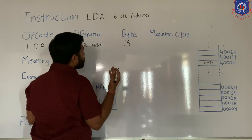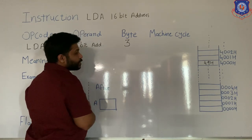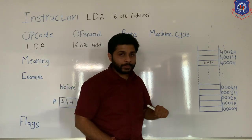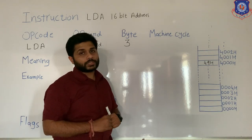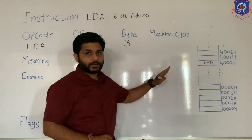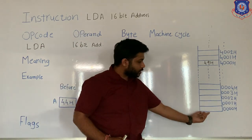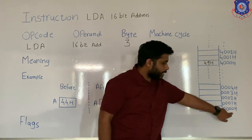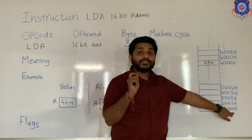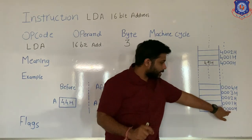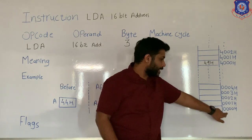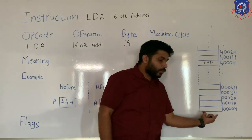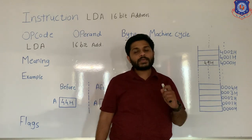A 3-byte instruction means that when this instruction is stored in the memory, it will occupy 3 memory locations — it will occupy 3 bytes. You know that one memory location can store 1 byte, which means 8 bits of data. The address of one location is 16-bit, represented in hexadecimal. So address is 16-bit and the storage capacity of one location is 8-bit.